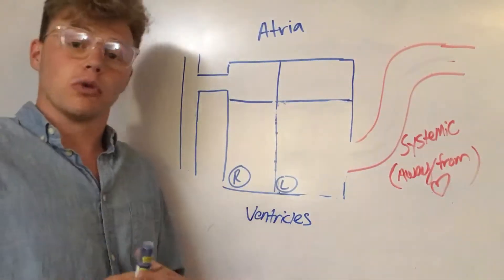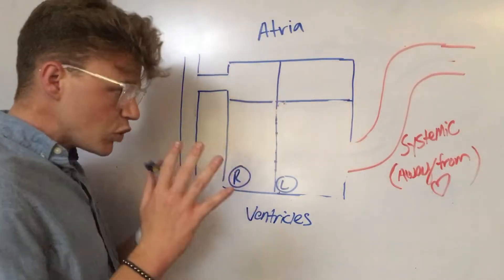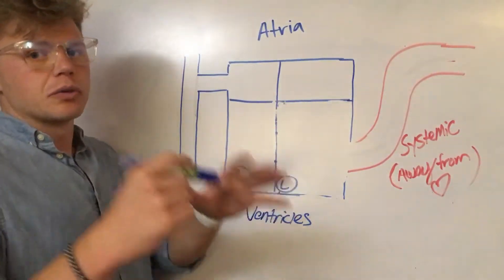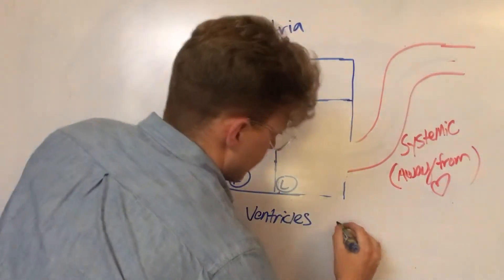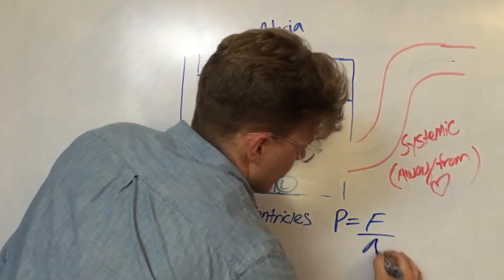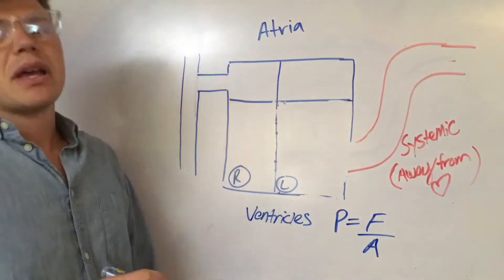And I want to show that with a couple vectors. So what we need to know is that pressure is equal to force over area, and I'm going to write that down here. So pressure is equal to force over area. So there's kind of a few things that can happen.